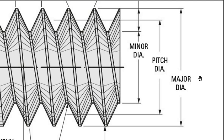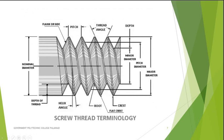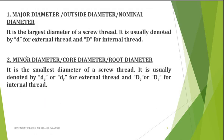The nominal diameter is the maximum diameter. It is usually denoted by small letter d for external thread and capital D for internal thread. It is also known as outside diameter and nominal diameter.